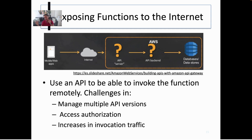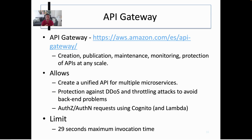If you want to expose a Lambda function to the internet, you need to use an API to invoke the function remotely and solve issues such as access authorization or increases in invocation traffic. Even though AWS Lambda provides the ability to expose an HTTP endpoint, if you want to go one step beyond in functionality, API Gateway is the way to go. It allows you to create, publish, maintain, and monitor REST APIs. It can protect against distributed denial-of-service attacks and can be integrated with Cognito for authentication and authorization, though it does have a 29-second maximum invocation time limit.